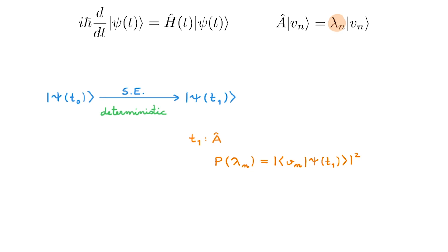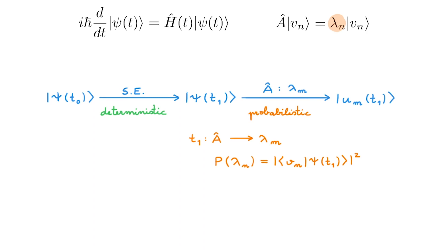However, once we have performed the measurement, we do get a specific eigenvalue, say lambda m. If we then follow postulate 5, the state of the system changes from psi to U_m. And this is the probabilistic step. An important point to note is that the times here are the same, because the state changes instantaneously with the measurement. So right after the measurement, the state of our system is U_m. The subsequent time evolution is again governed by the Schrödinger equation, and we can determine the state of the system at a later time in a completely deterministic manner until we perform another measurement.